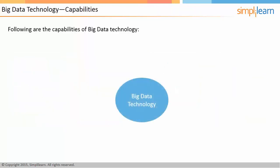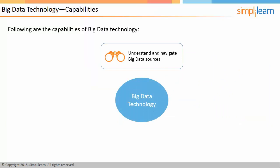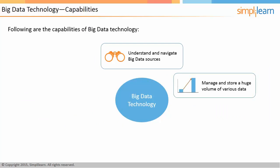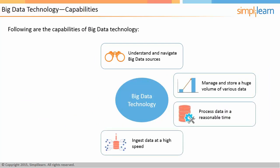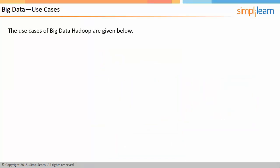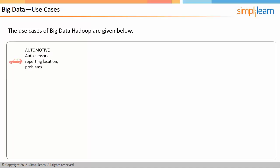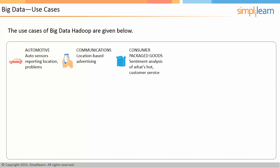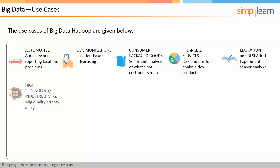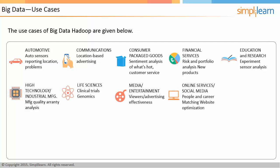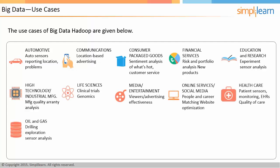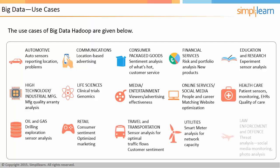Big data technology helps to understand and navigate big data sources, manage and store a huge volume of various data, process data in a reasonable time, ingest data at high speed, analyze unstructured data, and bear faults and exceptions. Big data technology appeals to various sectors and is used across industries including automotive, communications, consumer packaged goods, financial services, education and research, high technology and industrial manufacturing, life sciences, media and entertainment, online services and social media, healthcare, oil and gas, retail, travel and transportation, utilities, and law enforcement and defense.